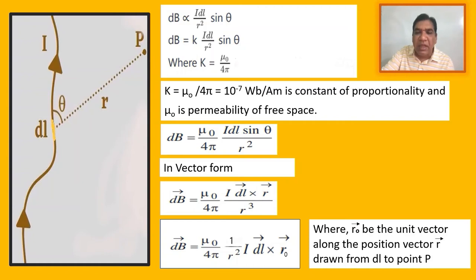Putting the value of K in the above equation, we get dB equals μ₀ over 4π times I dl sin θ over R squared. This equation can also be written in vector form.